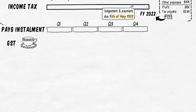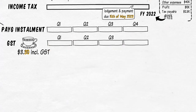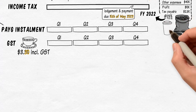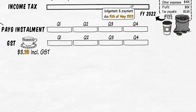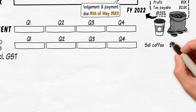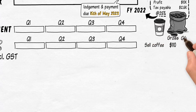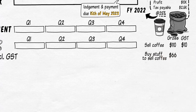Next is GST. When you sell coffee, you have to charge your customers GST — you are basically collecting that GST on behalf of the tax office. This is not your money because you need to pay it to the tax office, usually after every quarter. But before you hand it over, you can reduce that by any GST credits you have. So when you've paid GST on your business expenses like coffee beans and coffee cups, that should reduce your GST payable to the ATO. For example, if you sell coffee for $110, you have to give $10 to the ATO.